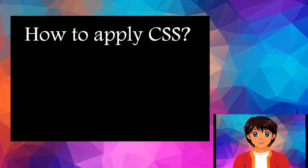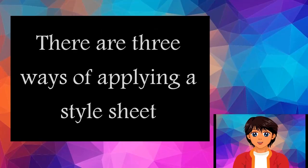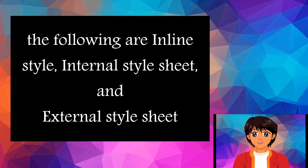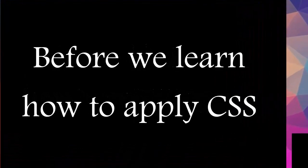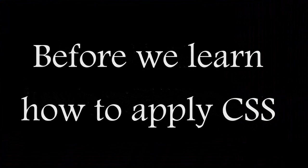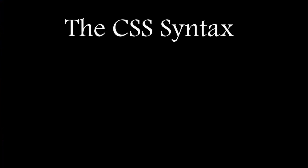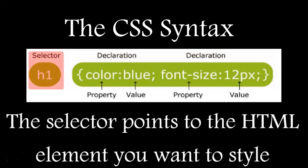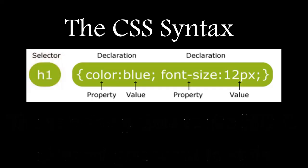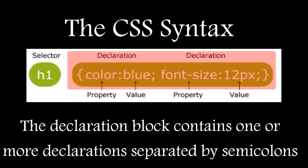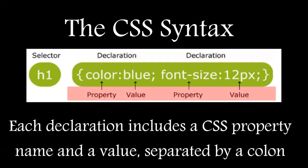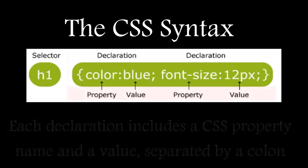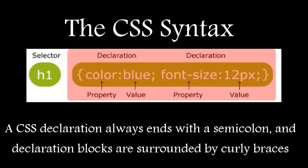How to apply CSS: There are three ways of applying a stylesheet — inline style, internal stylesheet, and external stylesheet. Before we dive into the details, let's learn about the syntax. A CSS rule set consists of a selector and a declaration block. The selector points to the HTML elements you want to style. The declaration block contains one or more declarations separated by semicolons. Each declaration includes a CSS property name and a value separated by a colon. A CSS declaration always ends with a semicolon, and declaration blocks are surrounded by curly braces.